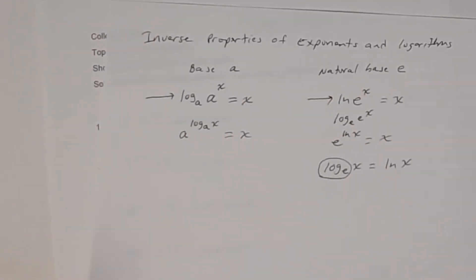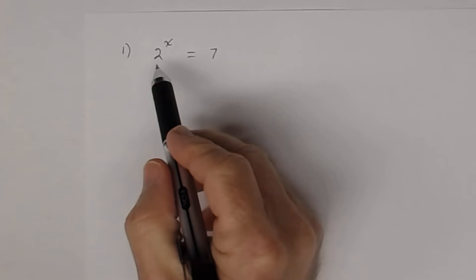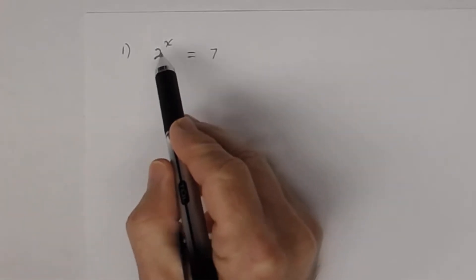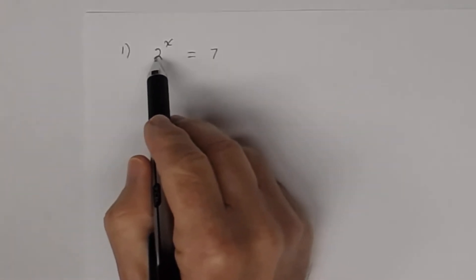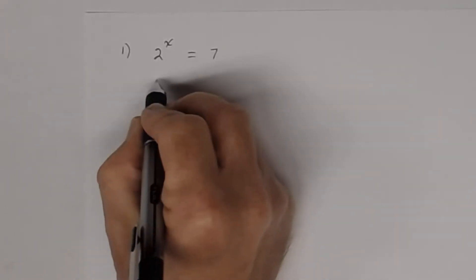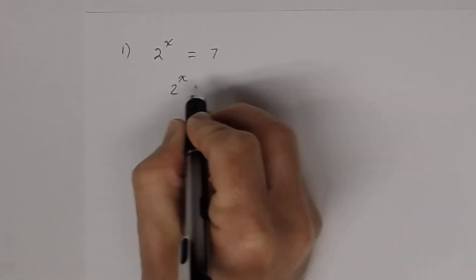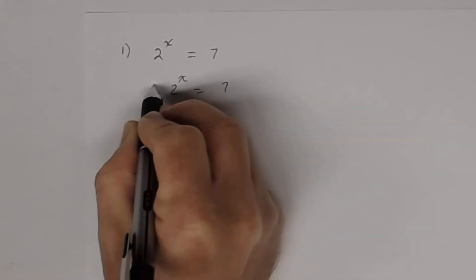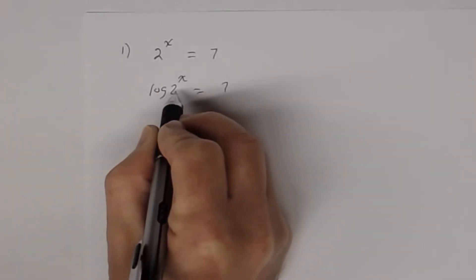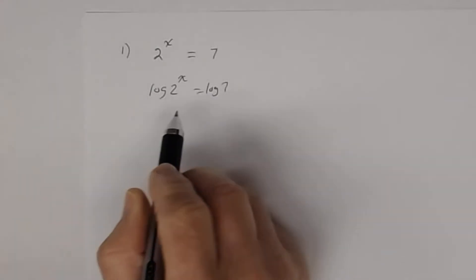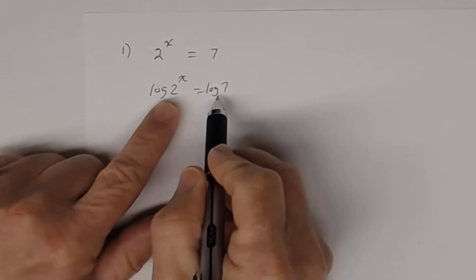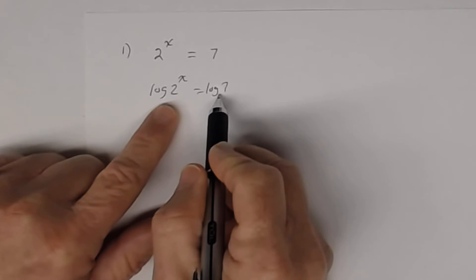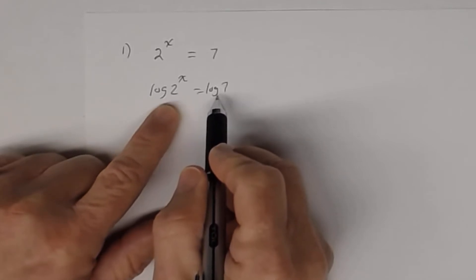Number 1: we have 2^x = 7. The exponential expression is already by itself. The way most people do this is to take the log of both sides base 10 — the common logarithm. Remember, if there's no base shown it's automatically understood to be base 10.